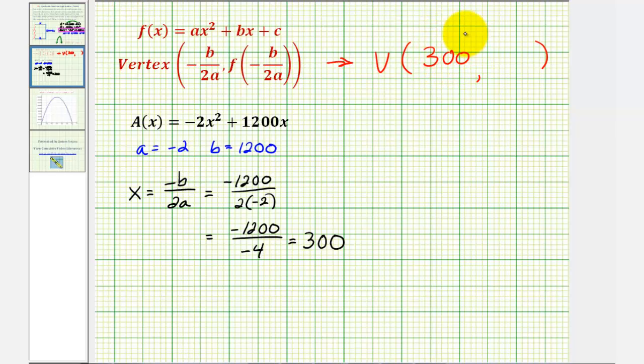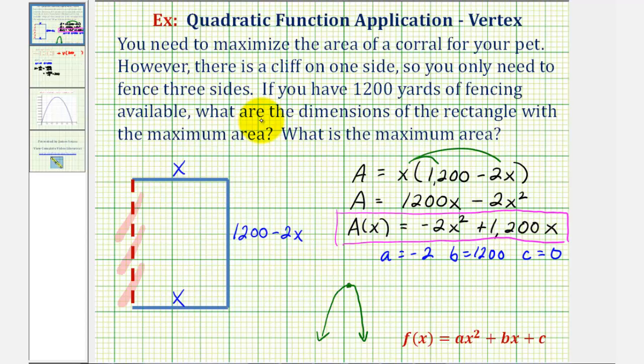So if we go back to our sketch just for a moment, that means the length of this side would have to be 300 yards in order to maximize the area of this rectangle.